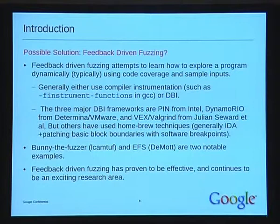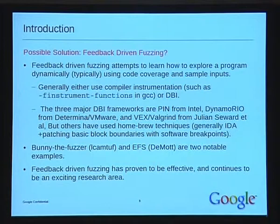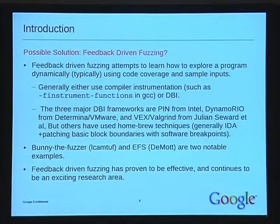Most implementations use things like finstrument-functions in GCC, which allows you to define callbacks when new functions are called, installed at compile time. Alternatively, you might use DBI — dynamic binary instrumentation. At the moment there are three major DBI frameworks: Pintool from Intel, which is available for Linux and Windows but proprietary; Dynamo Rio, which until recently was proprietary but has been released under a very liberal license; and Valgrind from Julian Seward, which because it's open source is quite useful on Unix platforms.